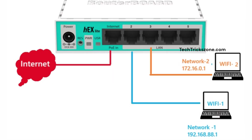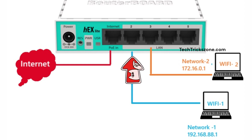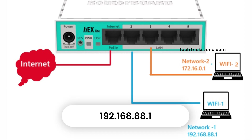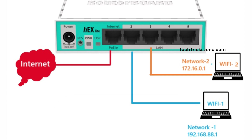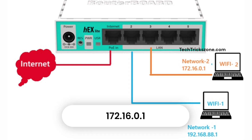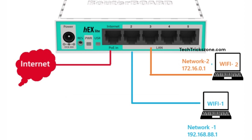Here is the network diagram we're going to configure in the MikroTik router. Ethernet 1 is connected to Internet. Ethernet 2 and Wi-Fi 1 will be on the 192.168.88.1 network — any device connected there will get an IP address from the 192.168.88.x series. Ethernet 3 and Wi-Fi 2 will be on the 172.16.0.1 network, and any device connected to Ethernet 3 will get an IP from the 172.16.0.x series.